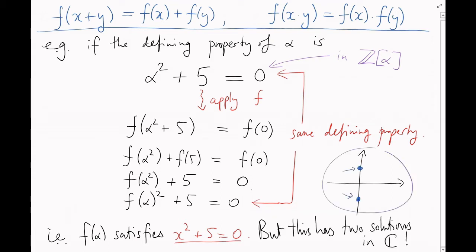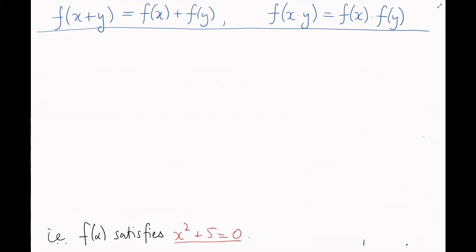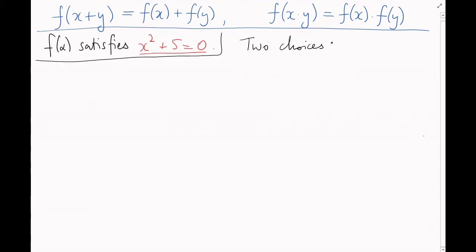But this equation has two solutions in C. Suddenly we have a choice to make. Now, once we've made this choice, everything else falls into place. If we make this choice, then f sends 1 plus alpha here, it sends 2 times alpha here, and so on.